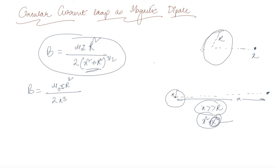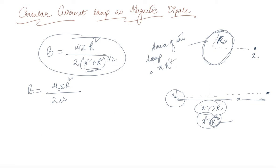This is the loop with radius R. The area of the loop is given by A = πR². If we include π in the expression, the formula gets modified to B = μ₀IA / (2πX³).